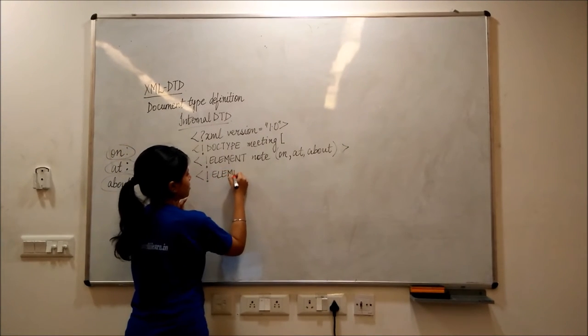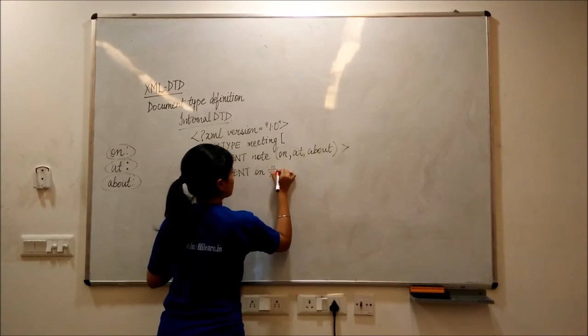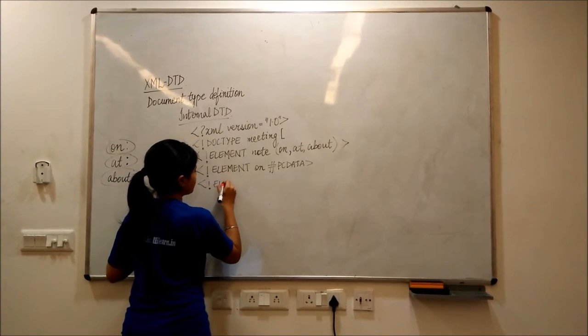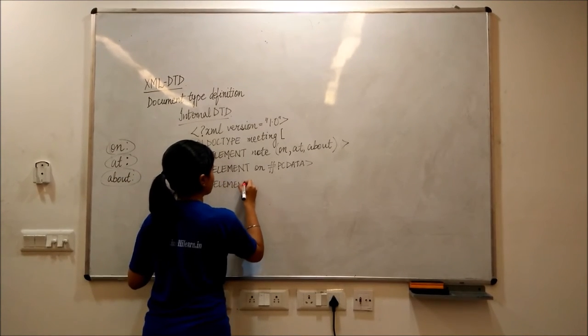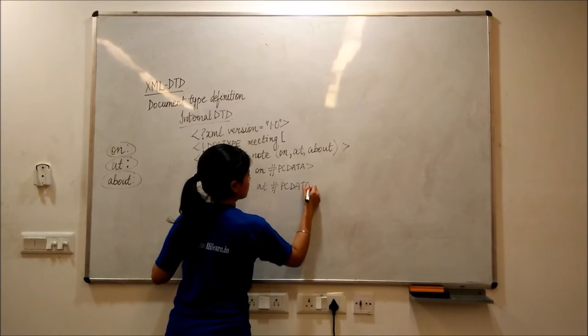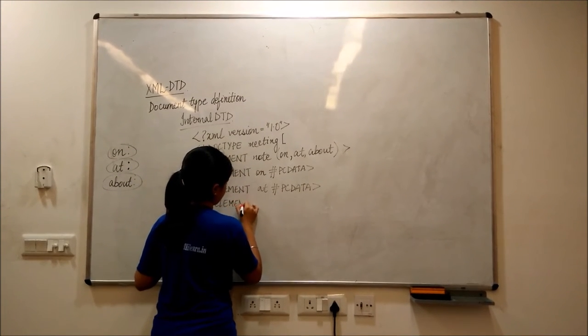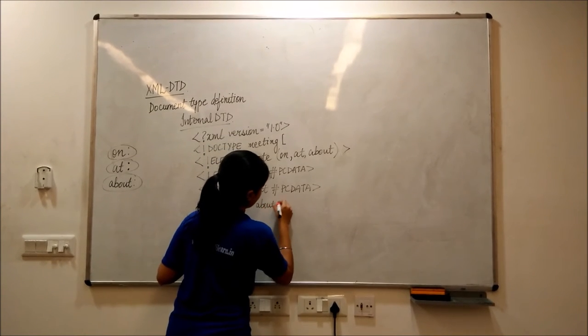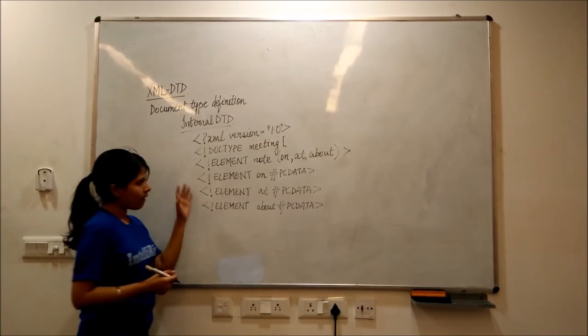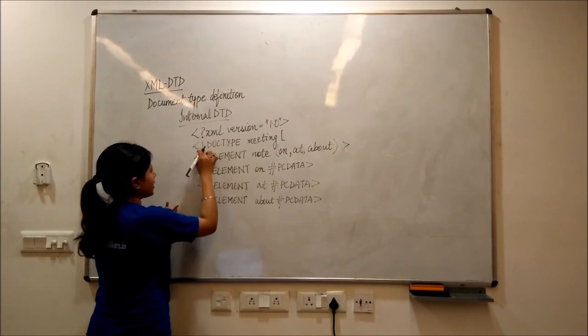element on, then element on. An element about. After declaring our three main things, we close this bracket, followed by this.